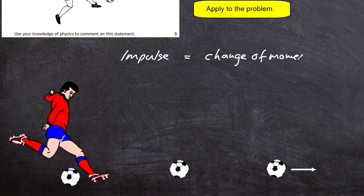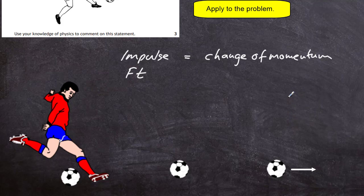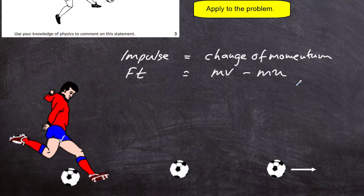Impulse is the force applied multiplied by t, the contact time. So ft is the impulse, with units of newton seconds, and that gives us a change of momentum. mv is the final momentum and mu is the initial momentum. Now we understand what the problem is about and we can put in our assumptions to apply the equation.